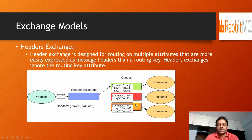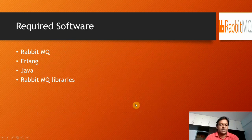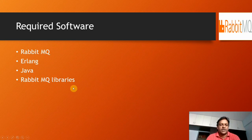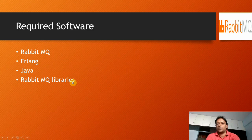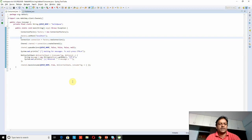Here are the requirements to configure and use RabbitMQ in your application: the RabbitMQ server itself, Erlang (which is required to run RabbitMQ), Java to write the programming, and RabbitMQ client libraries such as the HTTP client libraries. We can import those libraries to support the program.